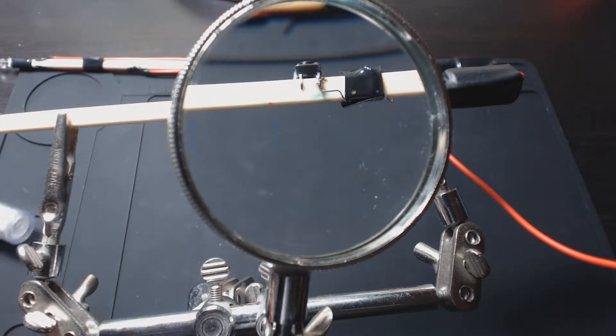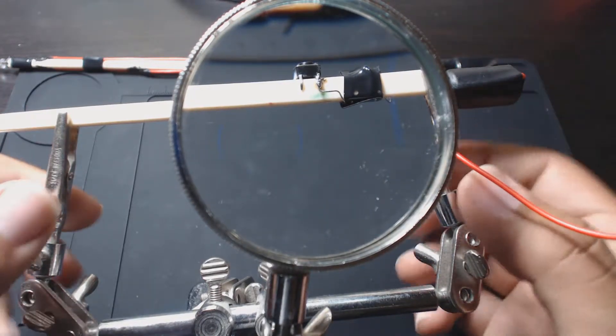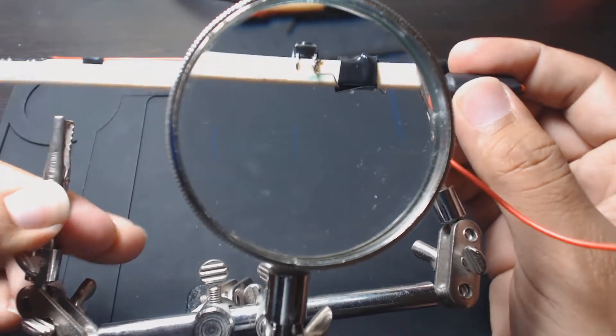Alright, so that's soldered on. It's probably a little sloppier than I'd like. Flip this around and now we'll cut—we'll have to cut the other wire and we'll do the same.